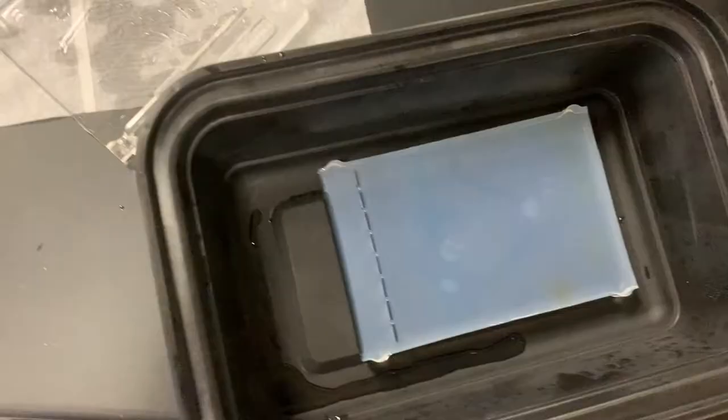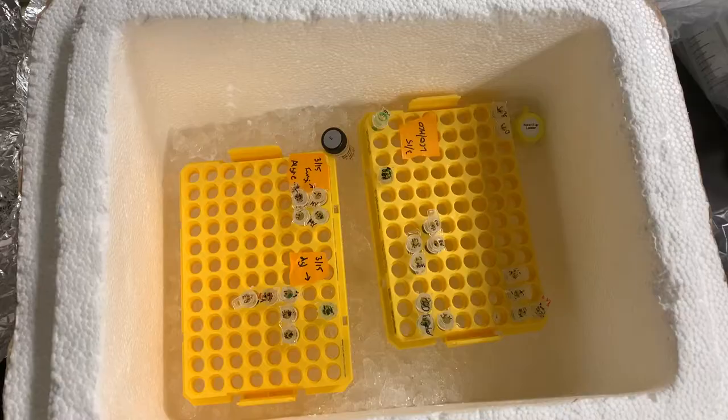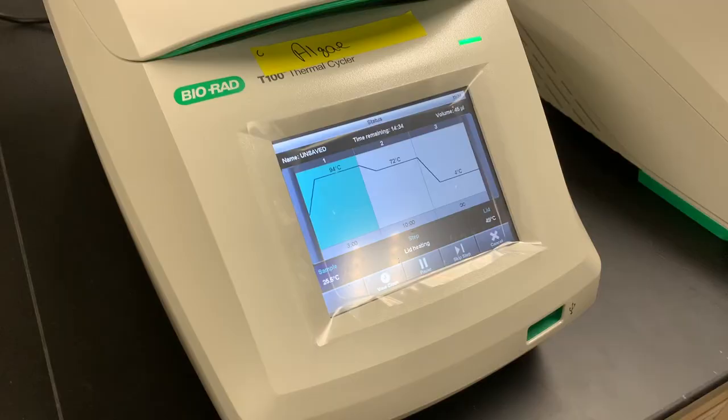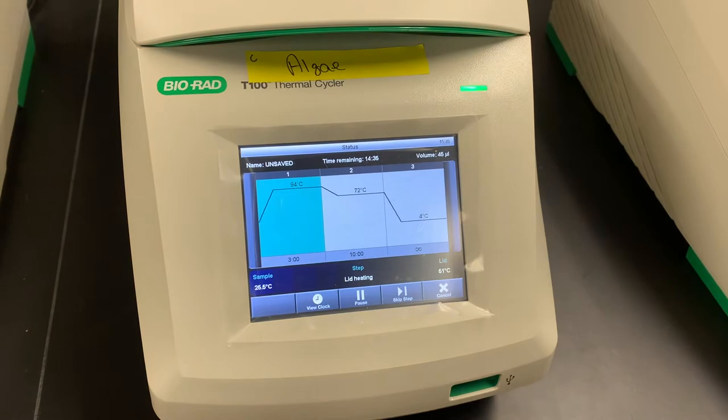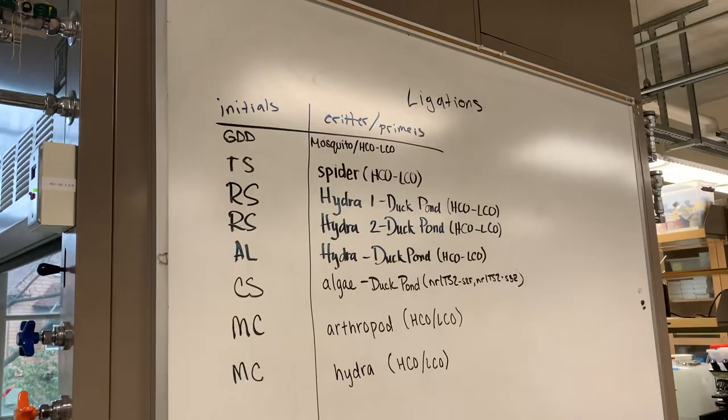So since one of my samples worked, I was able to move on to the TA cloning step where I added a mixture of PCR water, ligase buffer, vector and ligase to 0.4 microliters of my PCR sample to put in the PCR machine for cloning. Though a lot of the samples didn't work, there was still a good number from my section that did and moved to the cloning step.